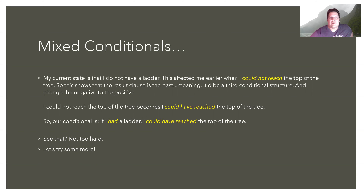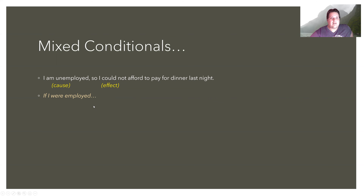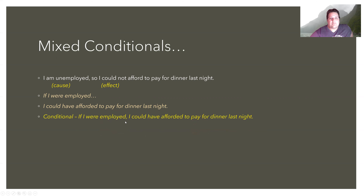'I am unemployed, so I could not afford to pay for dinner last night.' The cause is now and the effect is in the past — last night. We make the cause the second conditional, so 'I am unemployed' becomes 'If I were employed.' Then we get rid of the negative in the result and use the third conditional result clause: 'I could have afforded to pay for dinner last night.' So: 'If I were employed, I could have afforded to pay for dinner last night.'